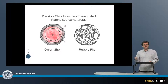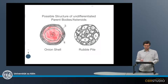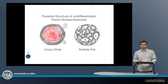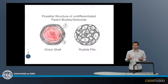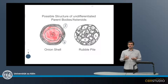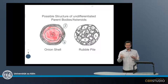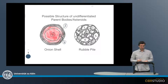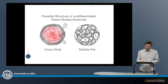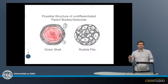In the core of such onion shell parent bodies there are the type 6 meteorites, then type 5, type 4, and type 3 meteorites. So if you look, for example, at primitive chondrites — like primitive carbonaceous, ordinary, or enstatite chondrites — these might be samples from the rim of such onion shell parent bodies.